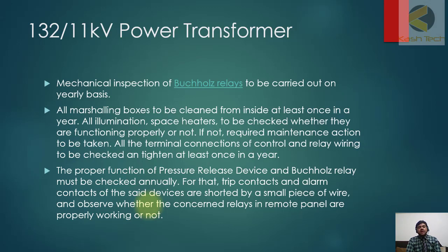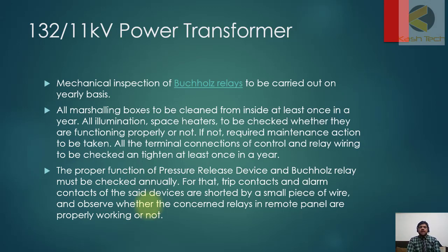All marshalling boxes should be cleaned from inside at least once a year. Illumination and space heaters should be checked to verify they are functioning properly; if not, the required maintenance action should be taken. All terminal connections of control and relay wiring should be checked and tightened at least once a year.